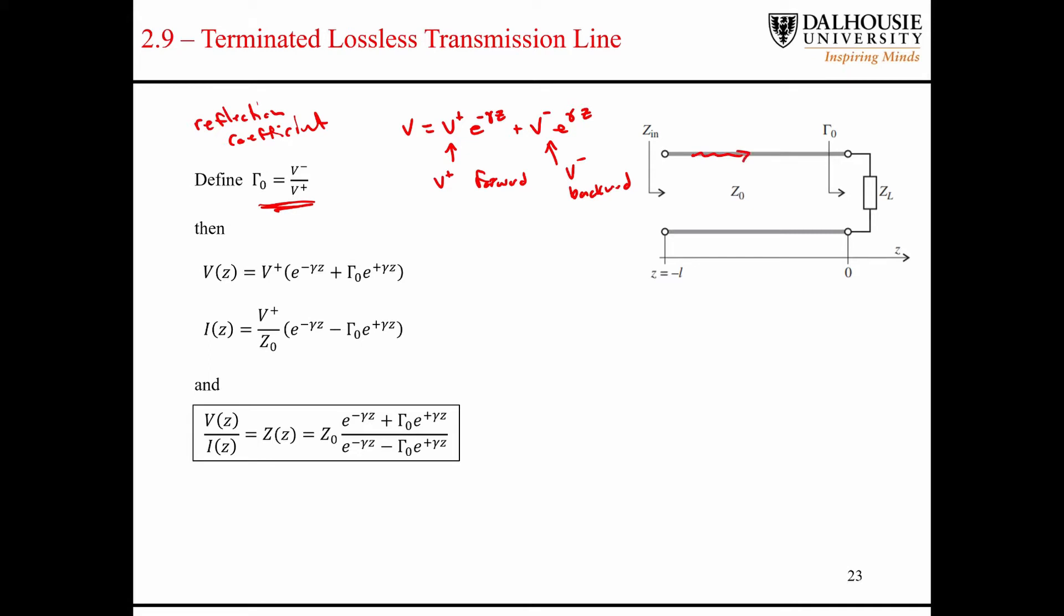If we have a voltage signal propagating through this transmission line in the form of a wave, there's going to be some degree of mismatch here between the load and the characteristic impedance of the transmission line. So when the signal reaches here, some of it is going to bounce back and that's the backward propagating wave here.